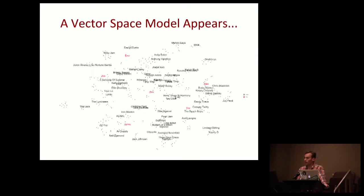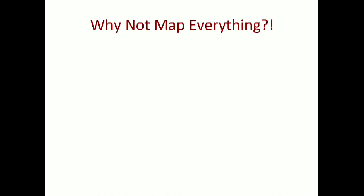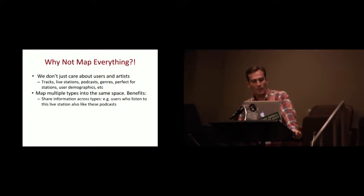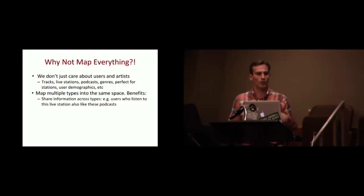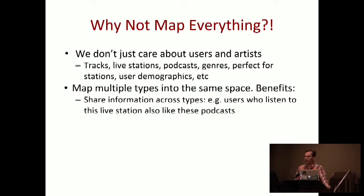The big theme here is 'why not everything?' We're not only interested in users and artists — we're also interested in tracks, podcasts, and live radio stations, and we want to recommend all these different entity types. Collective matrix factorization allows you to share information across users. If one group listens to podcasts and artists, and another listens to live radio and artists, you can cross-recommend those podcasts to groups that haven't listened to them by transferring information across users. That's really powerful.